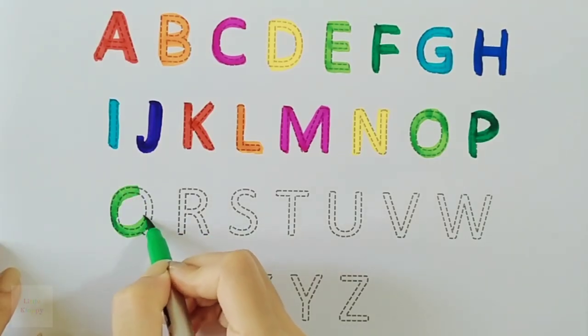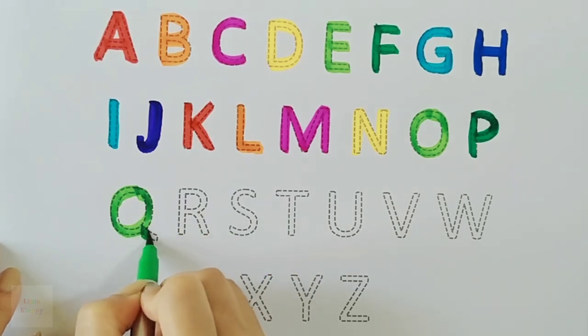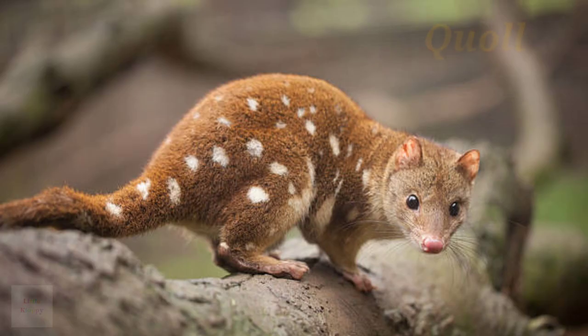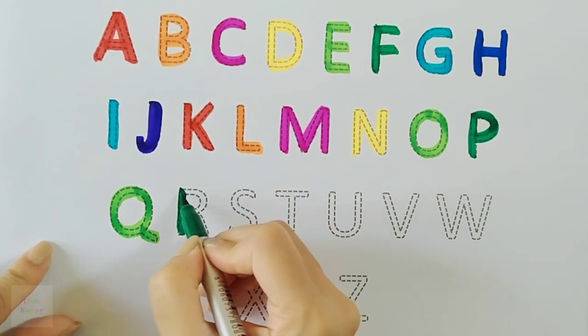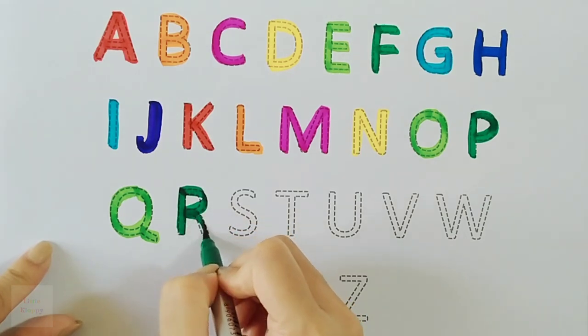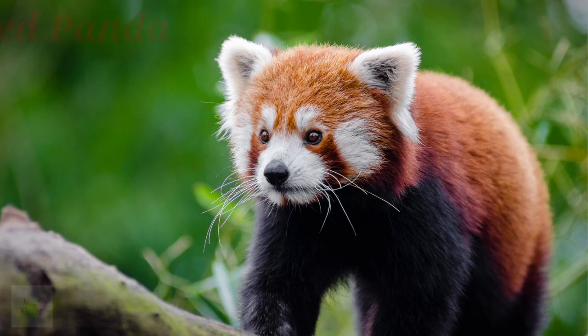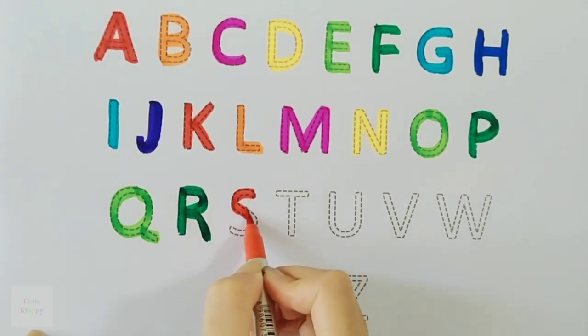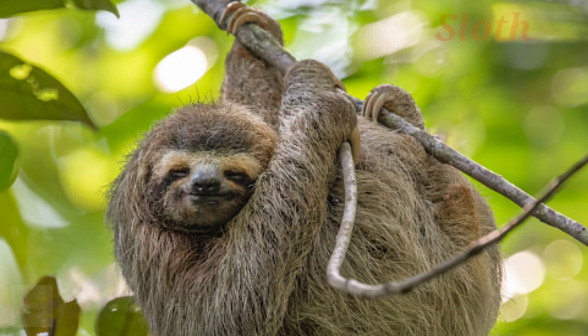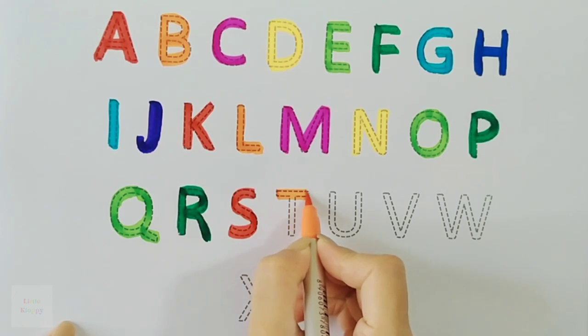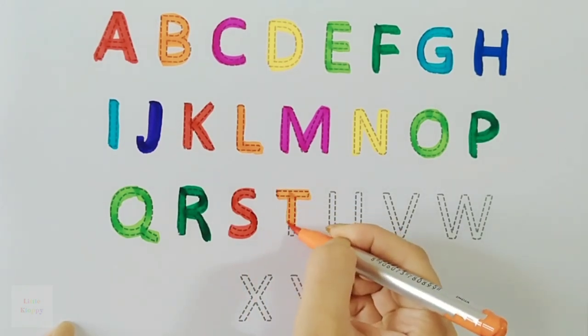Q for Quoll. R for Red Panda. S for Sloth. T for Tiger.